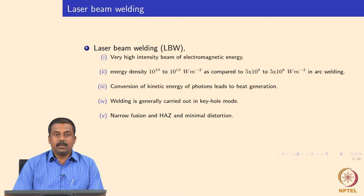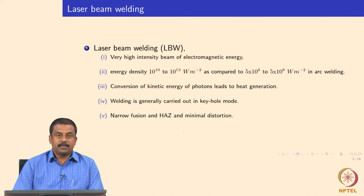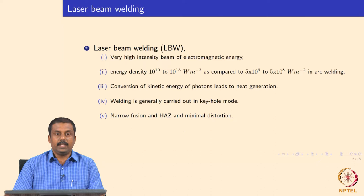Keyhole mode is extremely important to understand, and we will explain it in detail in subsequent lectures. Keyhole basically means full penetration — the weld is made in full penetration mode. Because of the concentration of heat in very narrow regions, the fusion zone formed in laser welding is also very narrow, and the temperature gradient is very steep, resulting in a narrow heat affected zone. Due to the reduced size of the fusion and heat affected zone, you can also expect minimal distortion after welding.